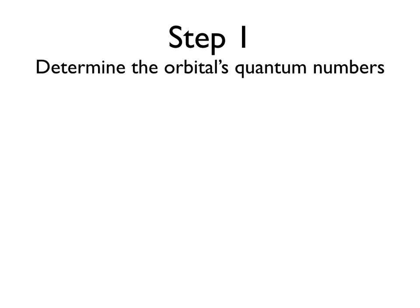In this problem, we're asked plain and simple, what is the shape of a 4d orbital? Well, to determine what the shape of this orbital is, first we need to determine what the quantum numbers involved in this orbital are.